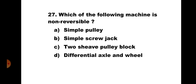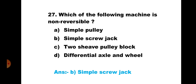Question number 27: Which of the following machines is non-reversible? A) simple pulley, B) simple screw jack, C) two-shoe pulley block, D) differential axle and wheel. Simple pulley, two-shoe pulley block, and differential axle and wheel are reversible machines. The only non-reversible machine is simple screw jack. The correct answer is B) simple screw jack.